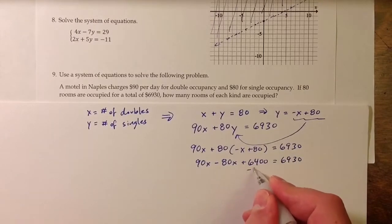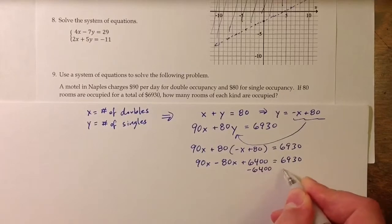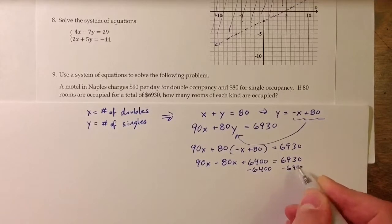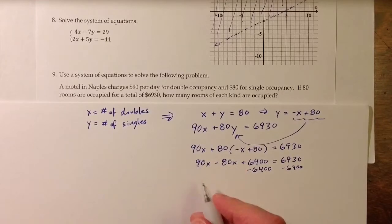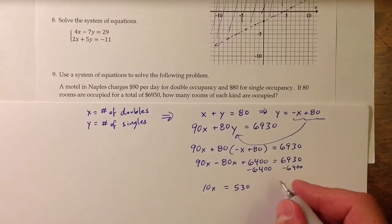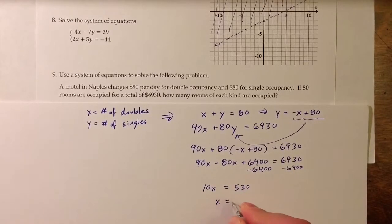And subtracting that from both sides and combining like terms, subtracting 6400 from both sides, combining the x terms here, I'm left with 10x equals 530. So I know the value of x, dividing both sides by 10, the value of x has to be 53.